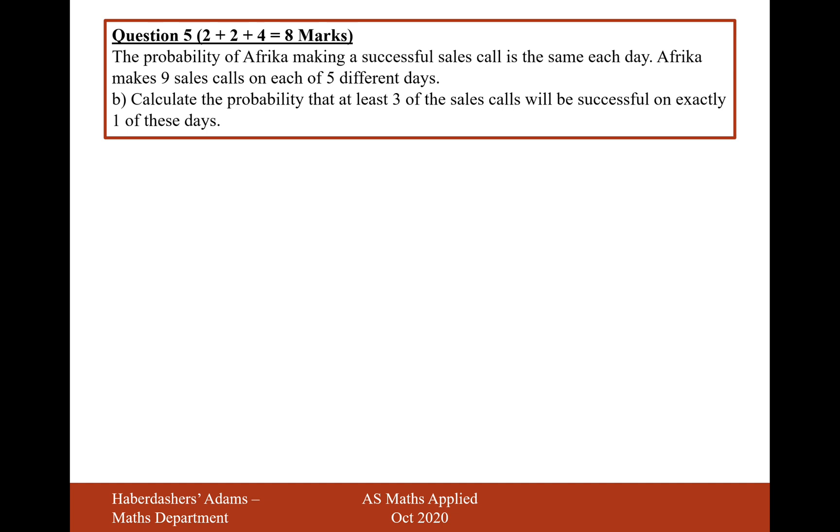Okay, moving on to part B. The probability of Africa making a successful sales call is the same on each day. Africa makes nine sales calls on each of five different days. Calculate the probability of at least three of these sales calls would be successful on exactly one day. So this is really linking it back to the question before. What we've already worked out is the probability of at least three successful sales calls on any given day. But now what we want to do is take five different days and find the probability that we have three successful phone calls or more on exactly one day. So this is a different type of binomial distribution here.